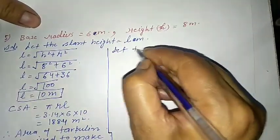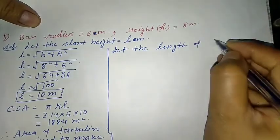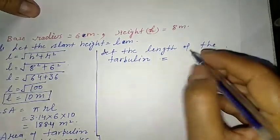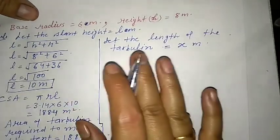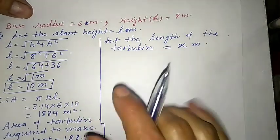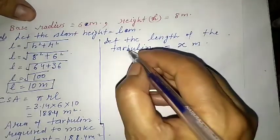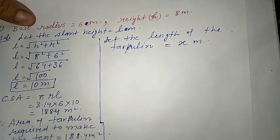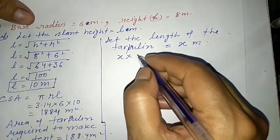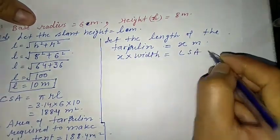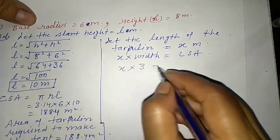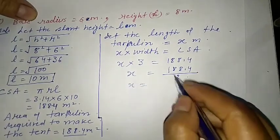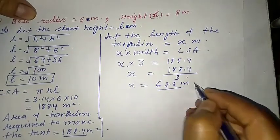Let the length of the tarpaulin be x meters. The tarpaulin is rectangular with width 3 m. So area = x × 3 = CSA = 188.4. Therefore x = 188.4 / 3 = 62.8 m.